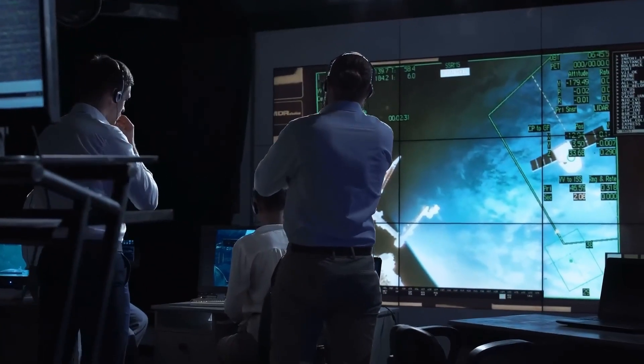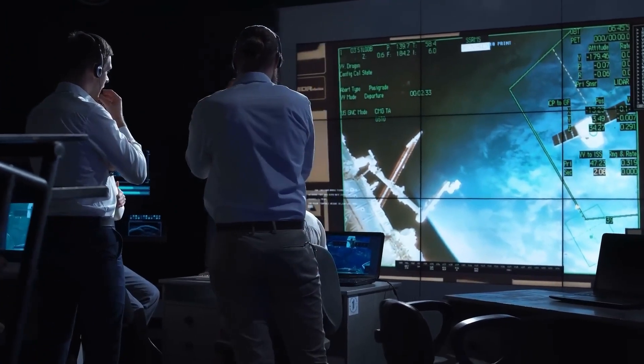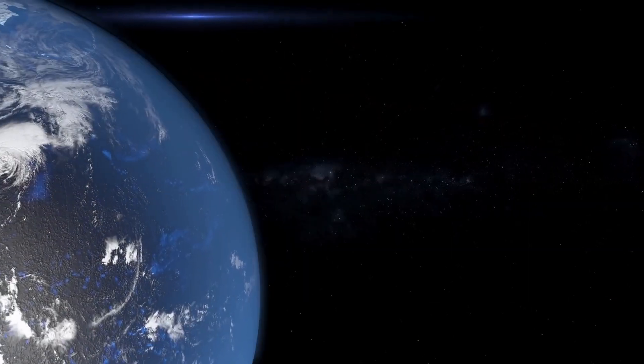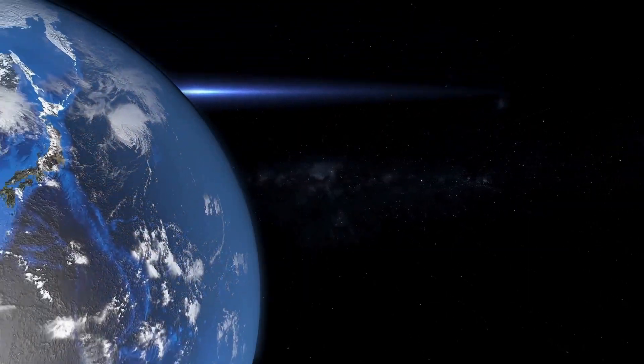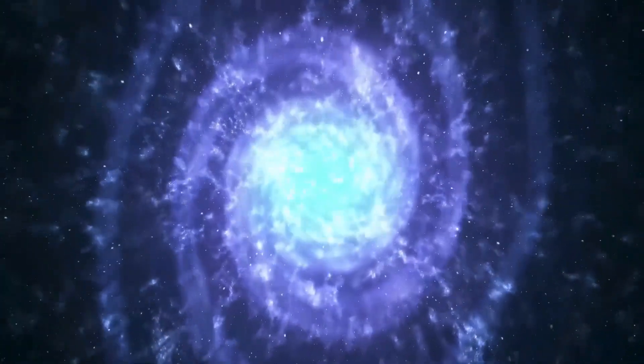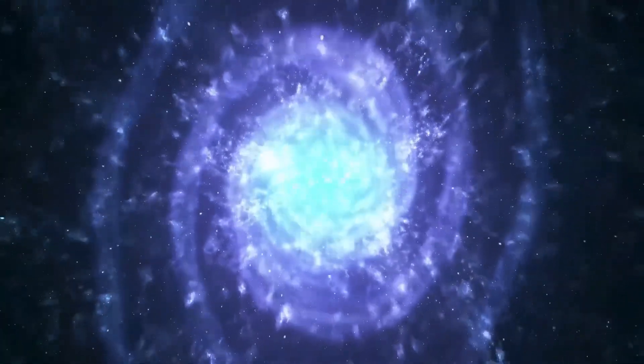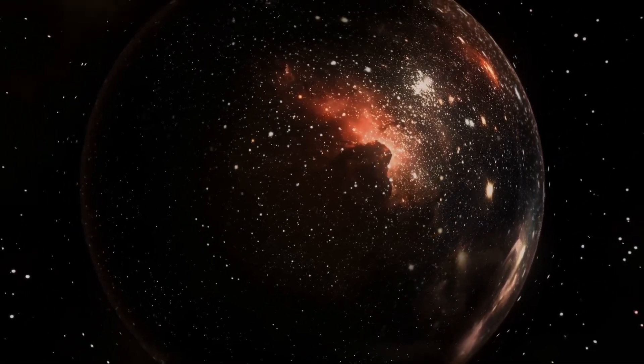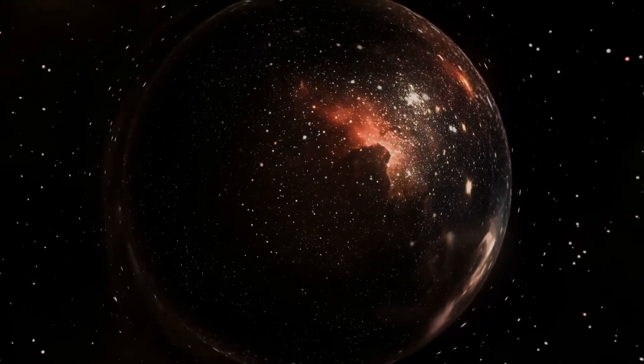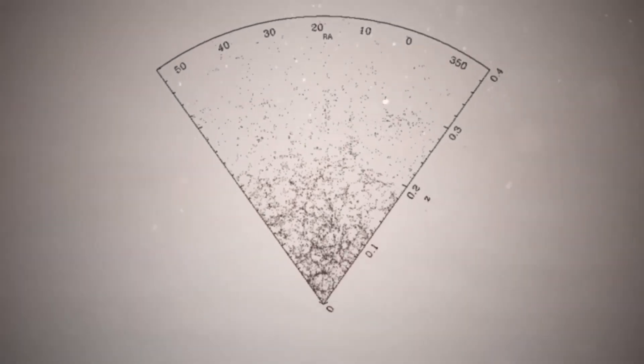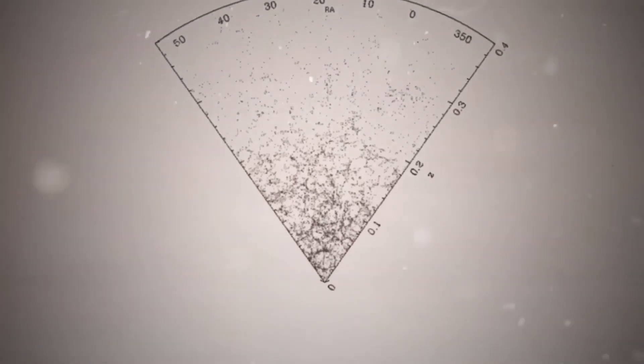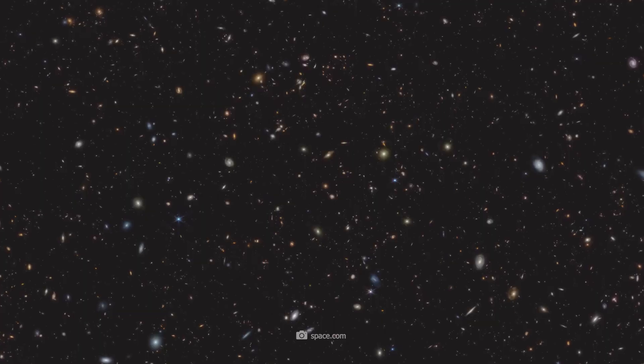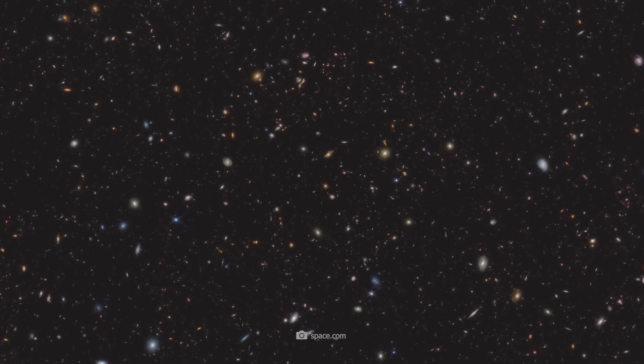The second theory suggests that the universe is finite, but it doesn't have a clear edge either. This means it's similar to a giant ball, and if you keep going in any direction, you'll eventually loop back to where you started. The third theory is the multiverse theory, which suggests that our universe is just one of many. Imagine a bunch of parallel universes, each with its own set of rules and properties. These universes could be completely separate from each other or somehow connected.